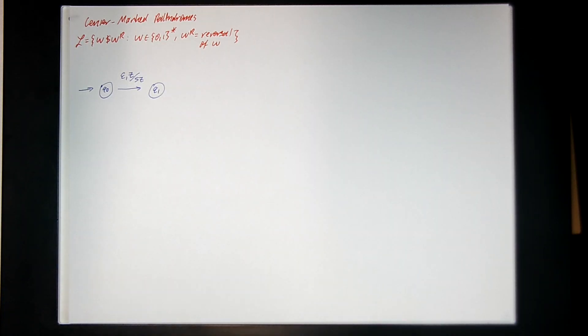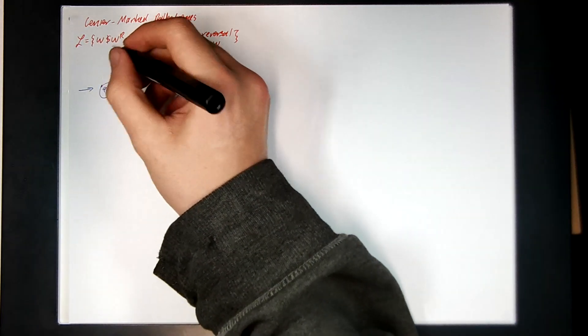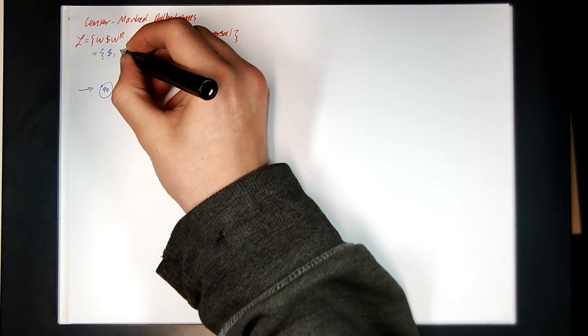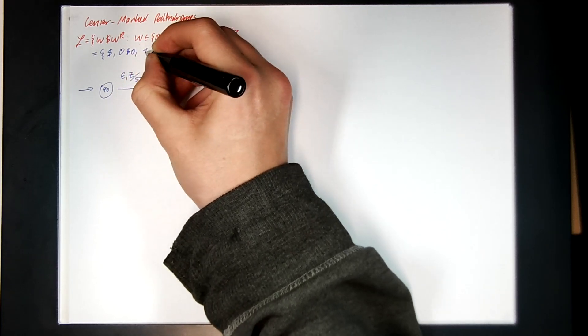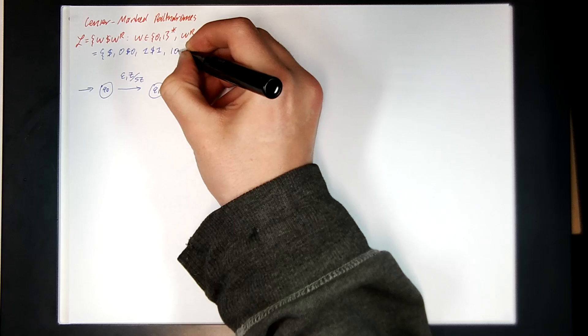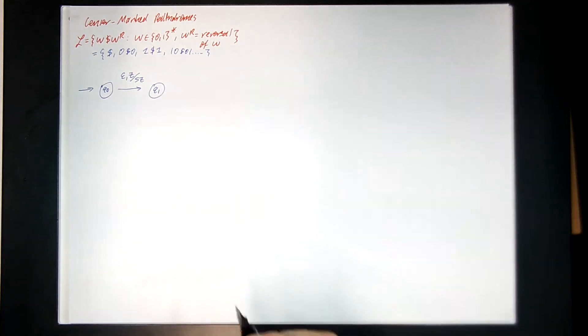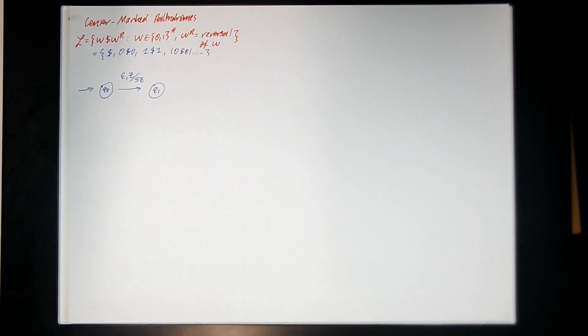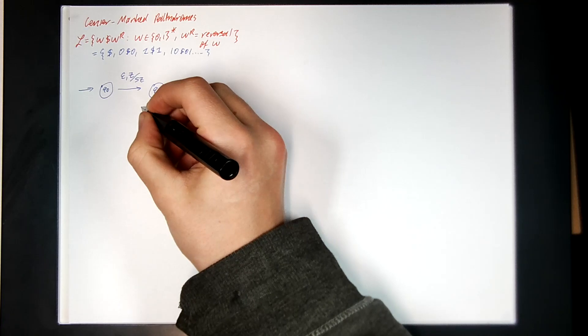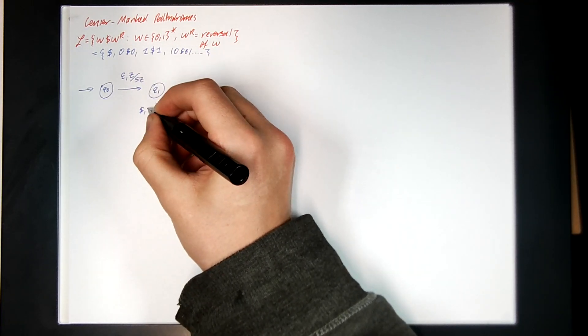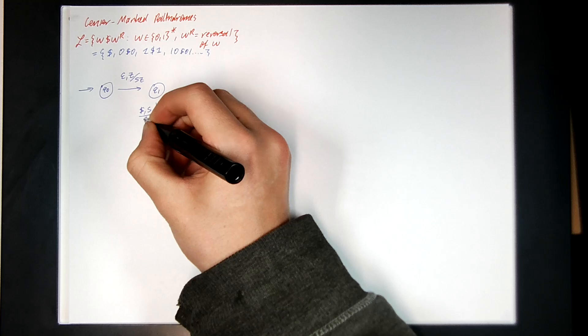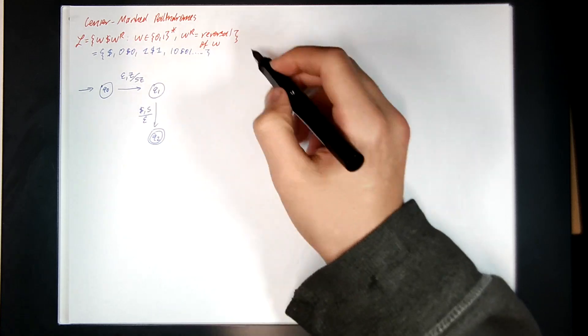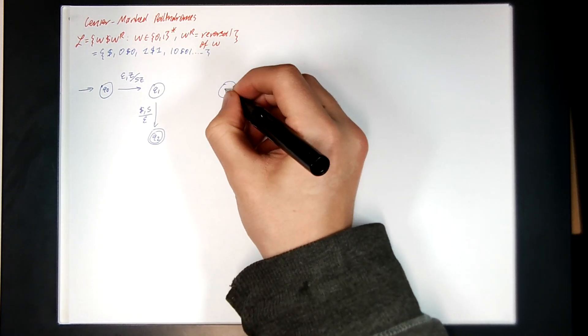And so what do I want to do here? Well, what can this language be? I guess it can be one of a few things. It can be just a dollar sign by itself. It can be zero dollar sign zero, one dollar sign one, one zero dollar sign zero one, and so on and so forth. So if we see a dollar sign, we should immediately accept.